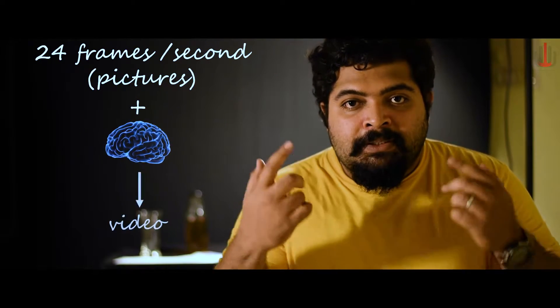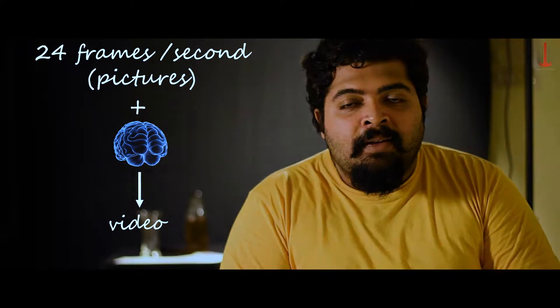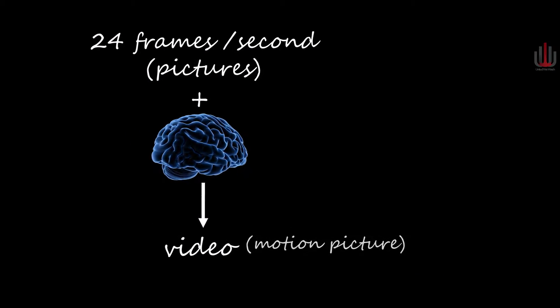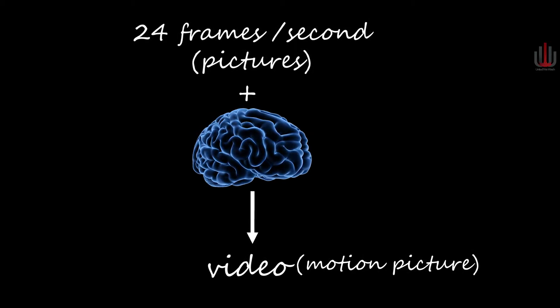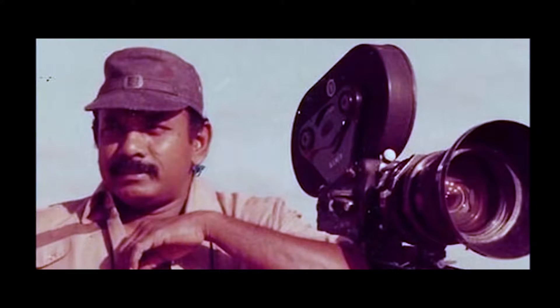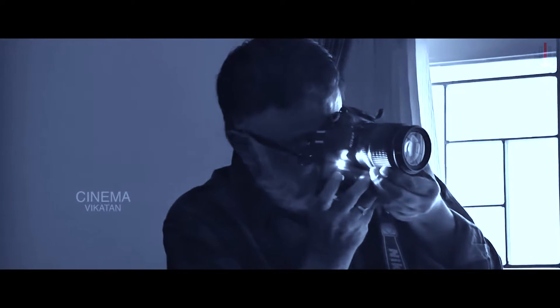In just one second, the human brain will perceive that as a motion picture. That's the hack of the eye and the brain. We feel it as motion — that's why it's called a motion picture. It's nothing but pictures in motion. The person in charge of visuals and lighting is known as the Director of Photography, because the underlying element of every video and footage is a photo.